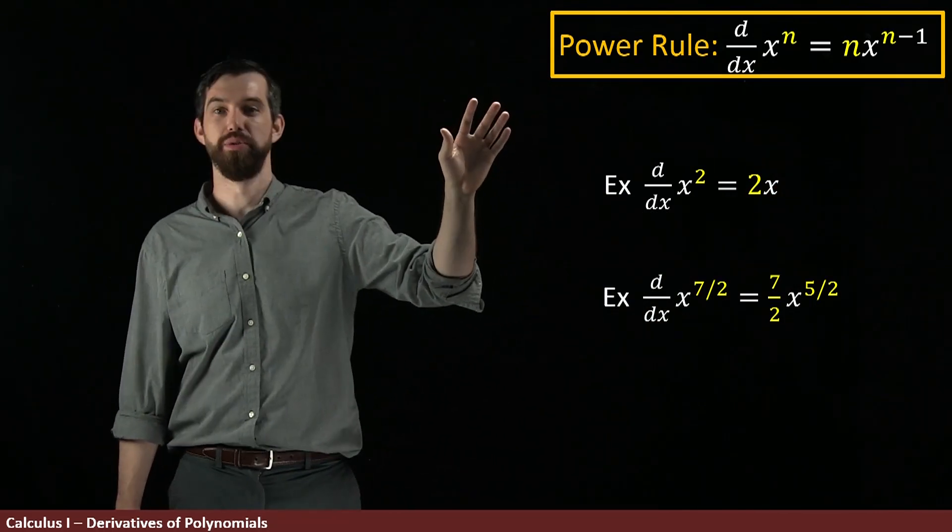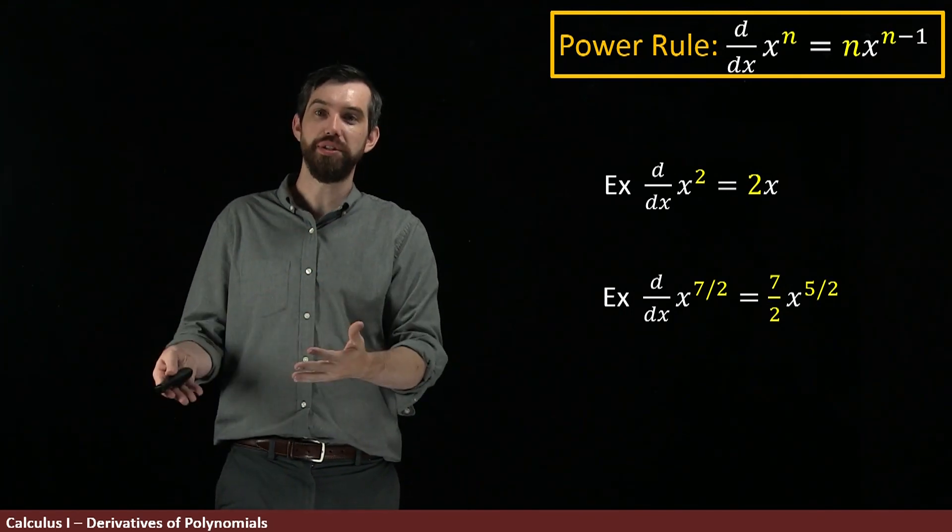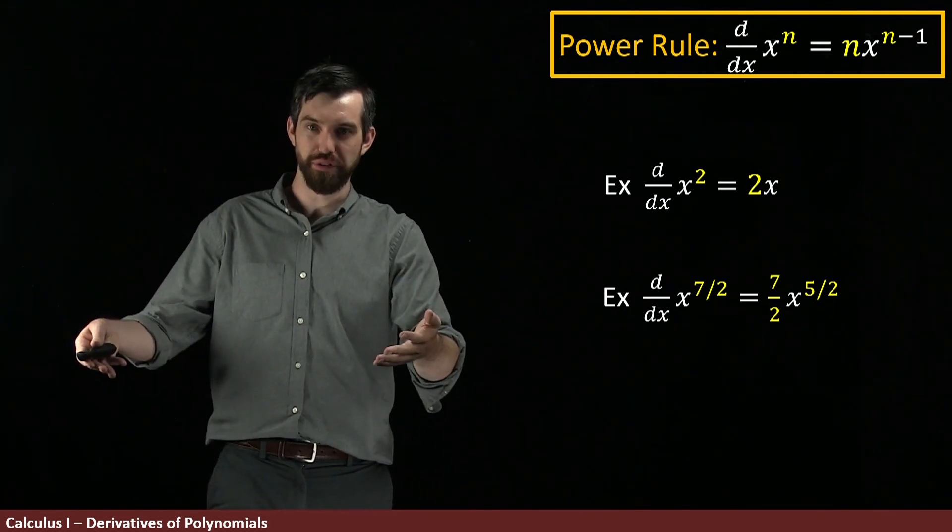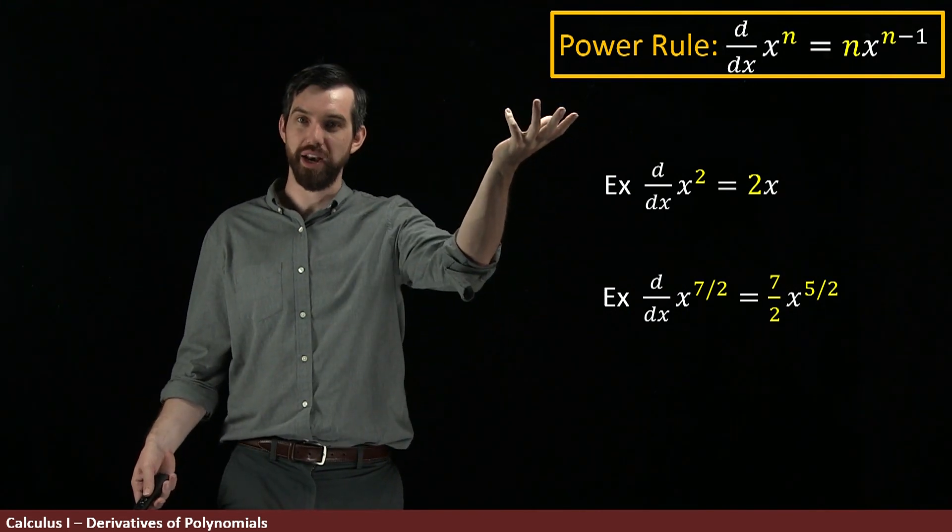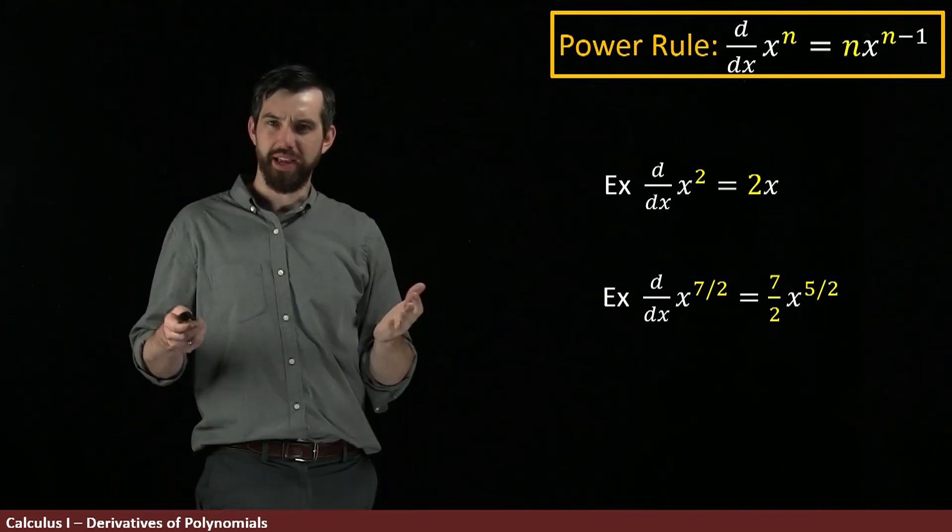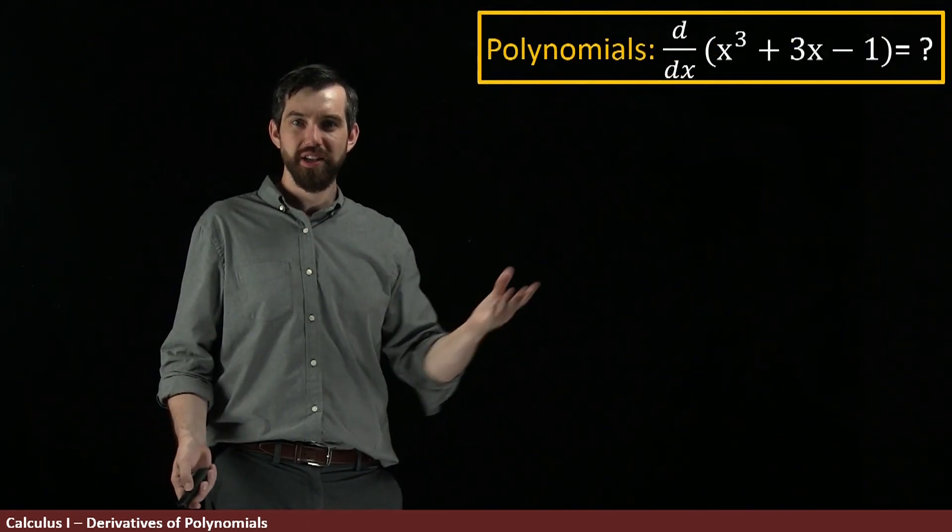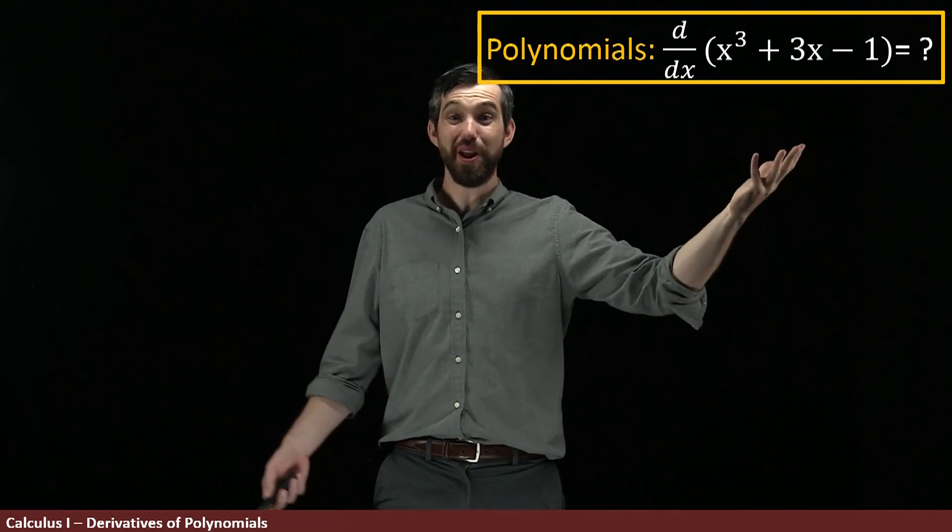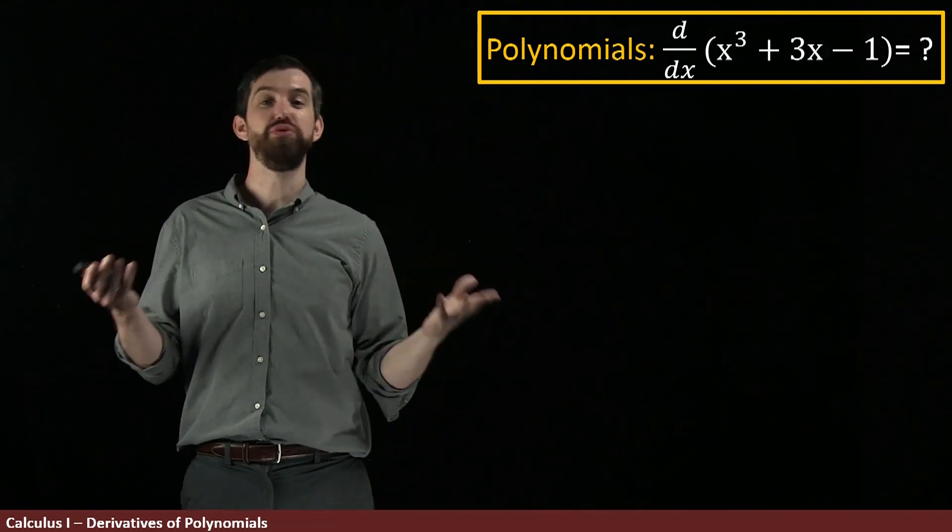Now, I'm not going to prove the power rule, but it's a similar idea to what we had just seen. We could use the definition of the derivative and a bunch of funky algebra to try to move in the direction of proving this power rule. Okay, so what if I don't have just powers, but I have some sums of powers? In other words, I've got a polynomial, and I want to take the derivative of a polynomial. How can we deal with that?